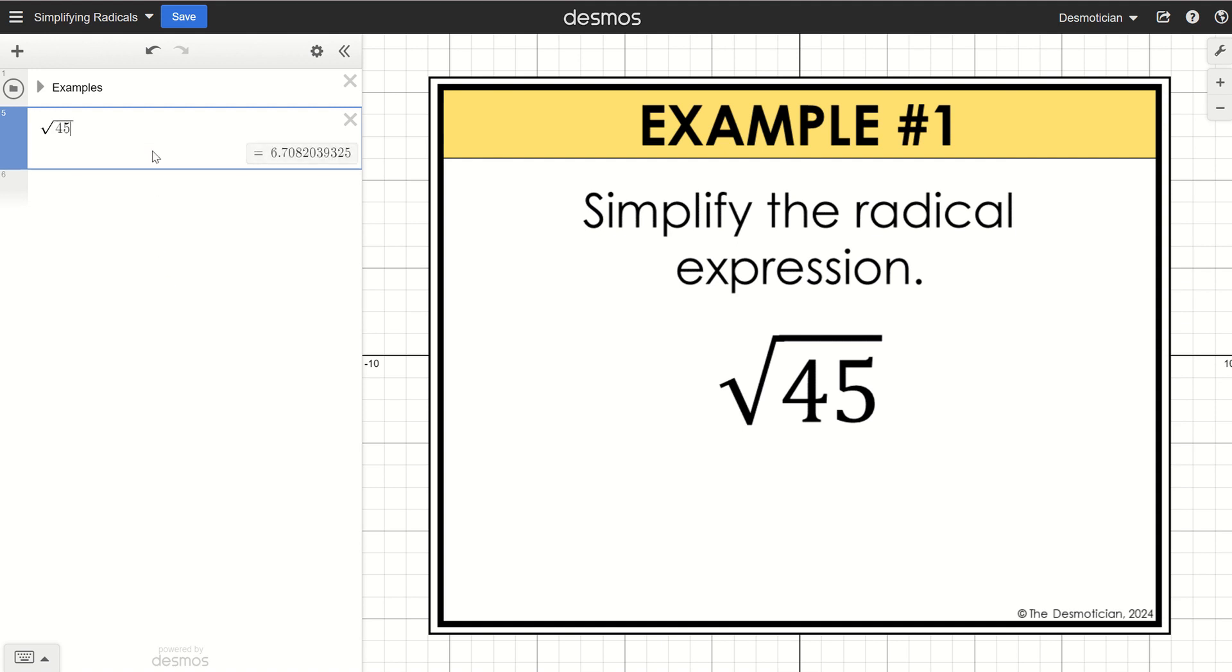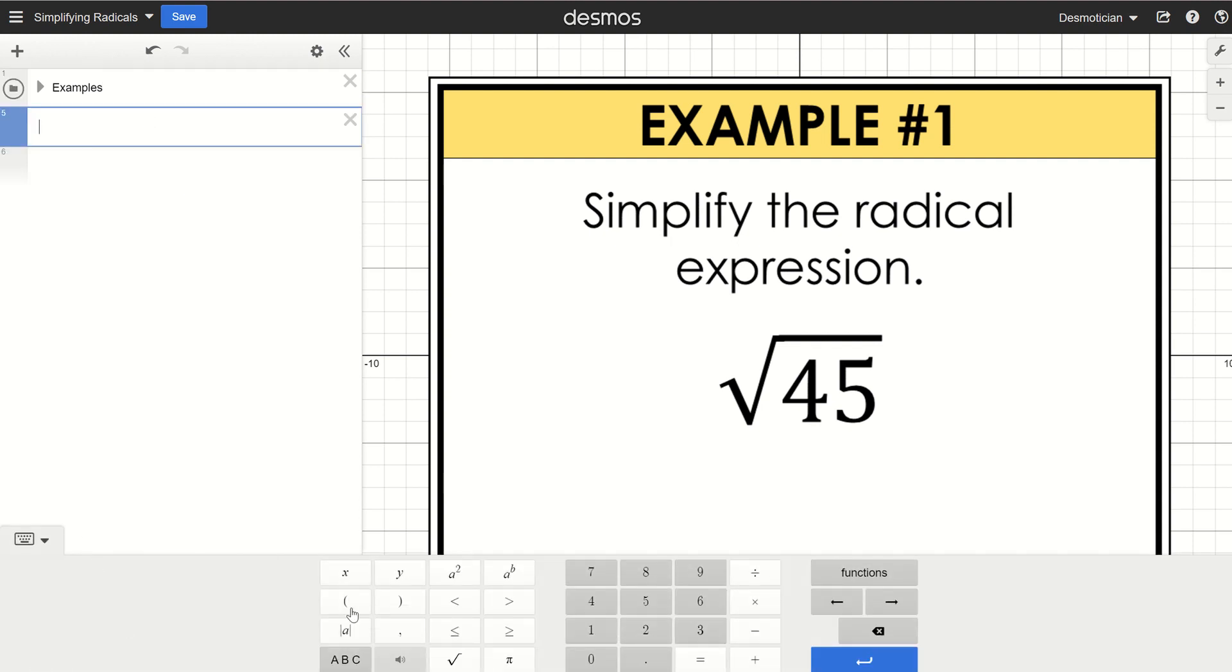You can see the decimal approximation there. Another way to type in square root of 45 is to use the keyboard symbol at the bottom and in that menu you will see a radical symbol. So here is square root of 45.